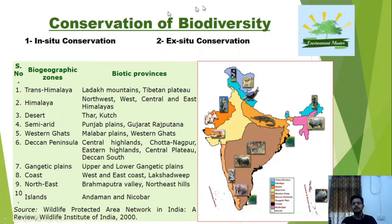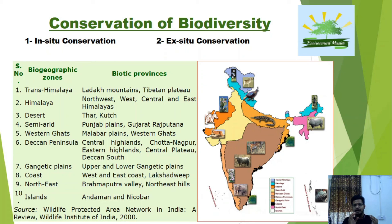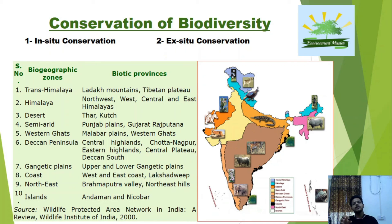When there is destruction of an ecosystem, loss of biodiversity also takes place. There are two main approaches to conserve biodiversity: in-situ conservation (at the original location) and ex-situ conservation (moving species from their original location to another). India is home to 10 biogeographic zones: Trans-Himalaya (Ladakh mountains and Tibetan Plateau), Himalaya (Northwest, West, Central, and East Himalaya), Desert (Thar and Kutch), and Semi-Arid regions of Punjab plains and Gujarat-Rajputana.